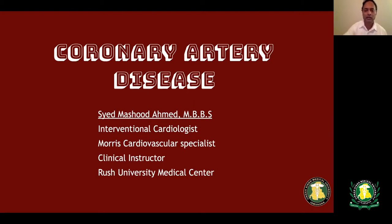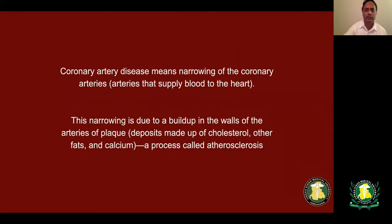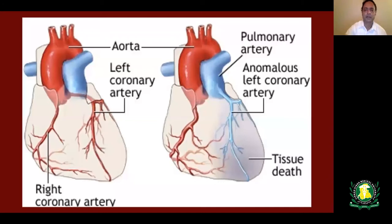In adults, the definition of coronary artery disease is narrowing of the coronary arteries due to buildup of cholesterol plaque, a process called atherosclerosis. But there are other congenital coronary artery diseases which we usually don't see in adults, such as anomalous origin of the left coronary artery from the pulmonary artery, what we call ALCAPA.